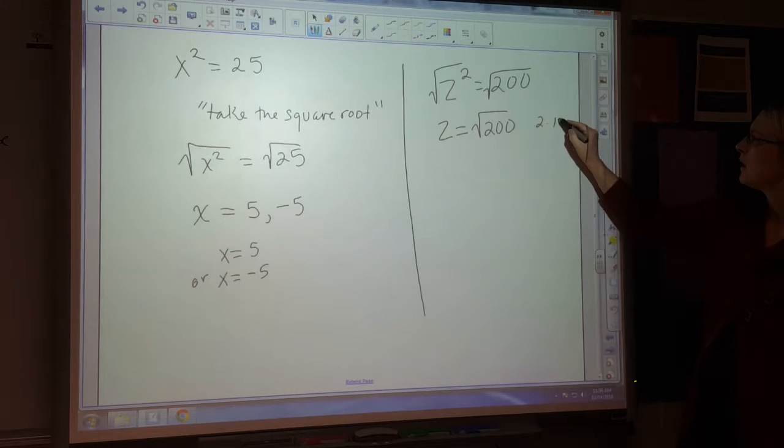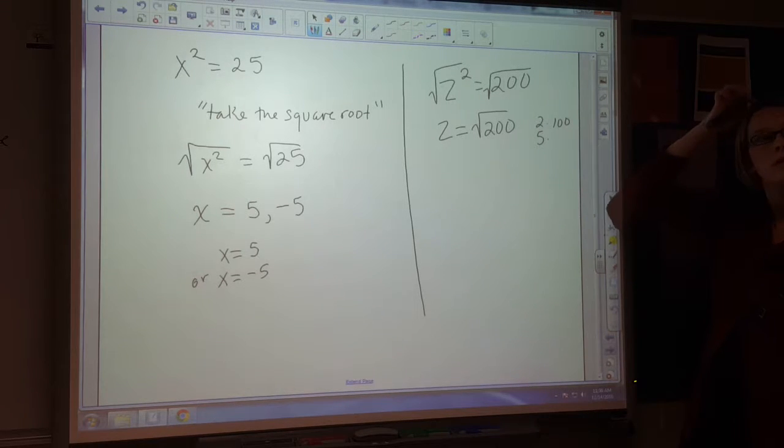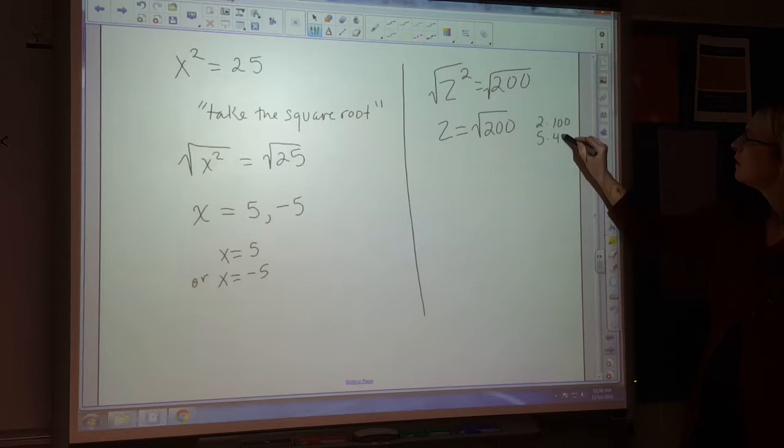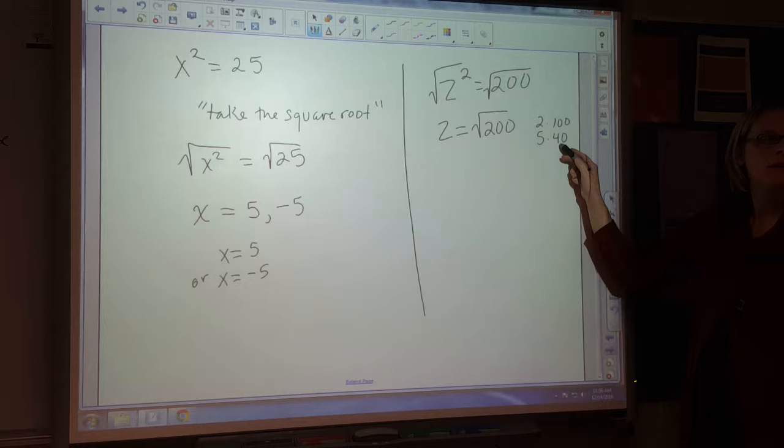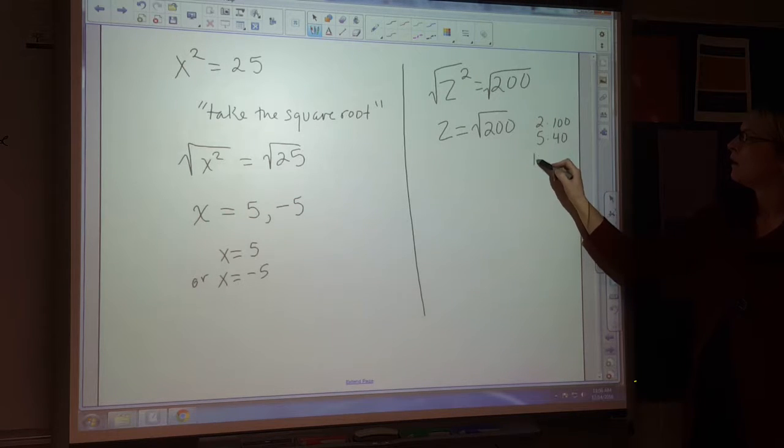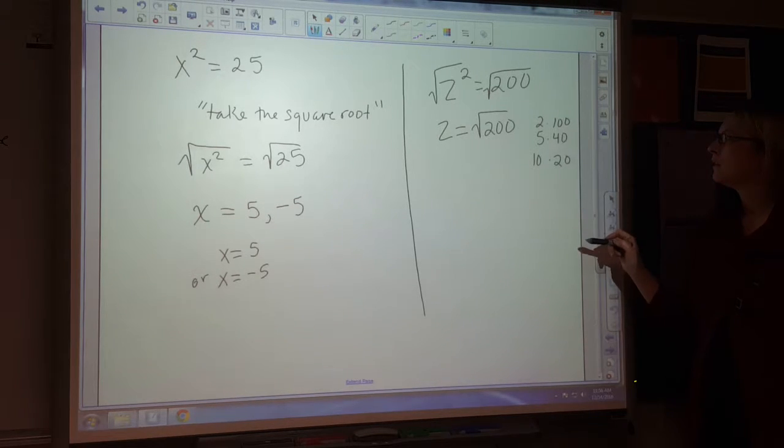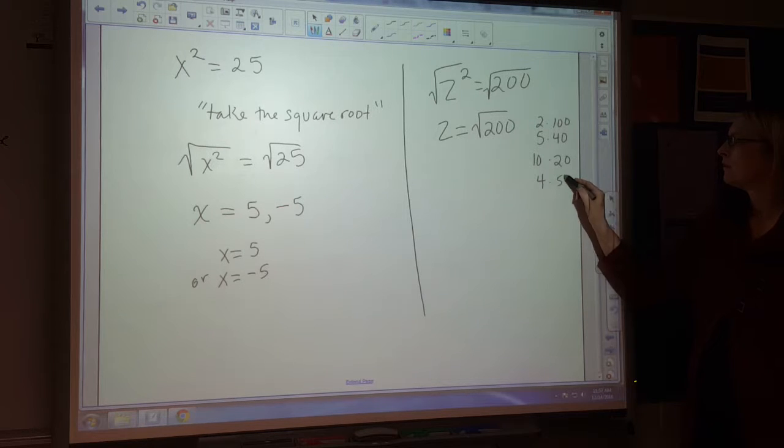2 and 100, yep. What else? 5 and what? 5 times 40, I think. That's 100. 5 times 20 is 100. We're doing 200. Isn't 5 times 4 20? 10 and what? 20. 10 and 20. Any others? 4 and 50? 1 and 200. 8 times 25.